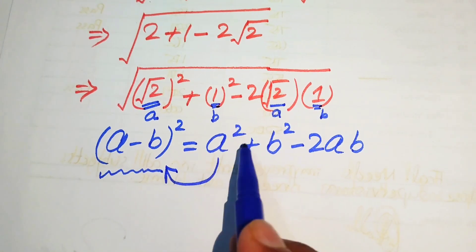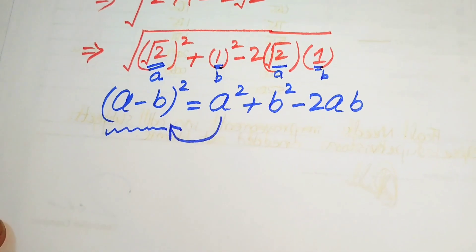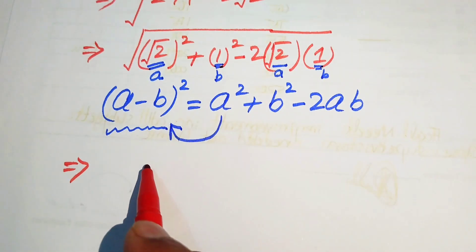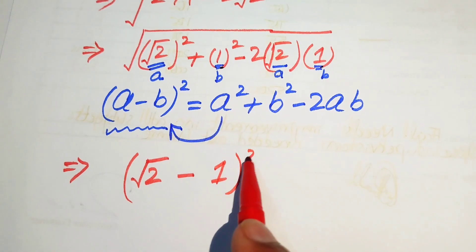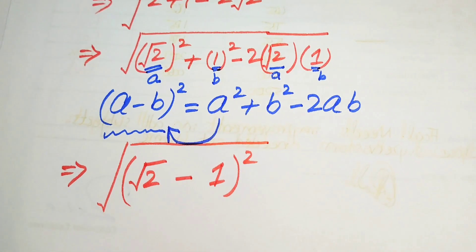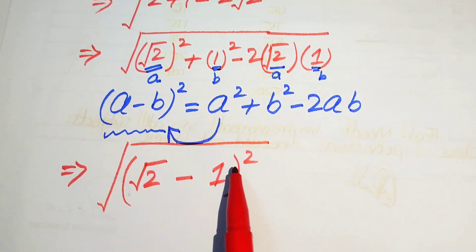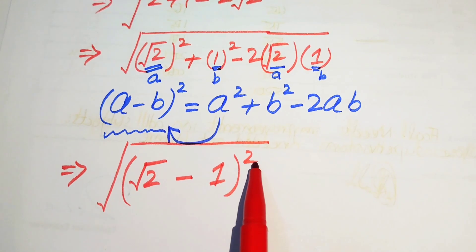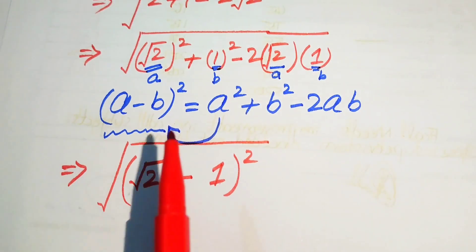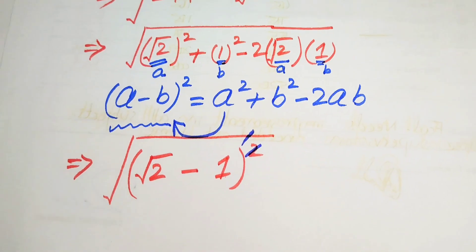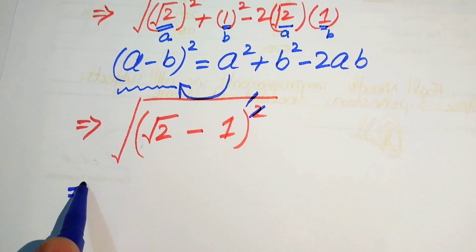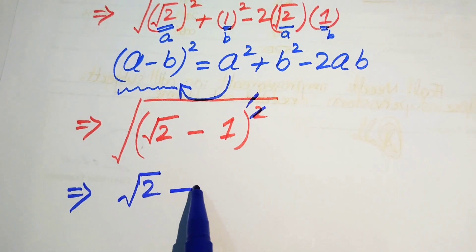When we combine all these terms, the combined form equals a minus b whole squared. So the value of a is square root of 2 and b is 1, giving us square root of 2 minus 1, whole squared, inside a whole square root. This 2 and square root cancel each other, so we obtain square root of 2 minus 1.